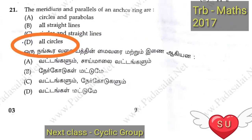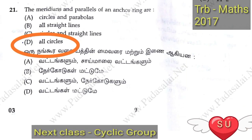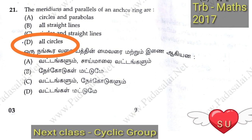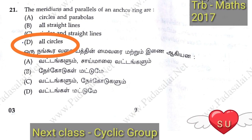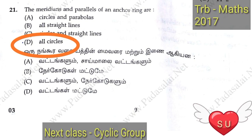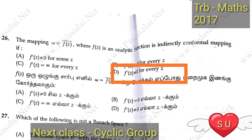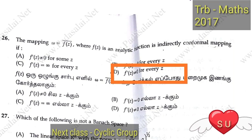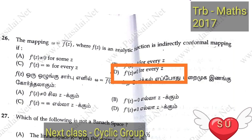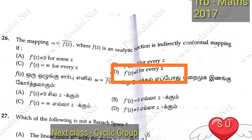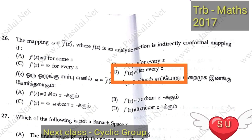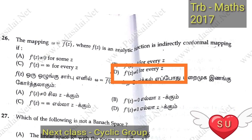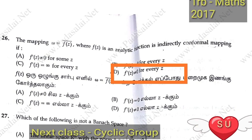Next one: the meridians and parallels on the anchor ring are all circles. Next, mapping — mapping where w equals f of z-bar, where f of z is an analytic function. This is a conformal mapping, where f prime of z is not equal to zero for every z in the domain D.